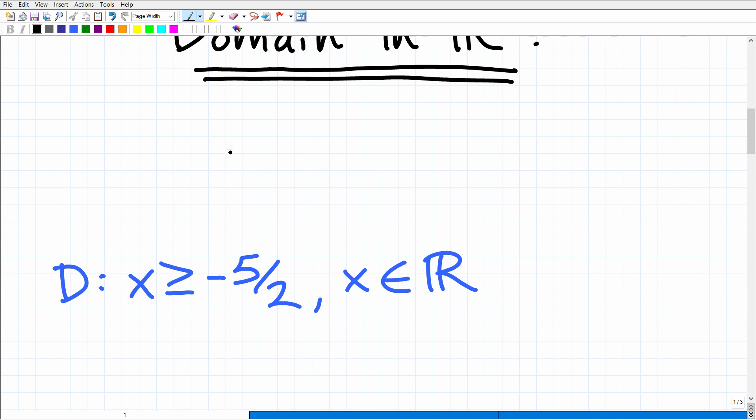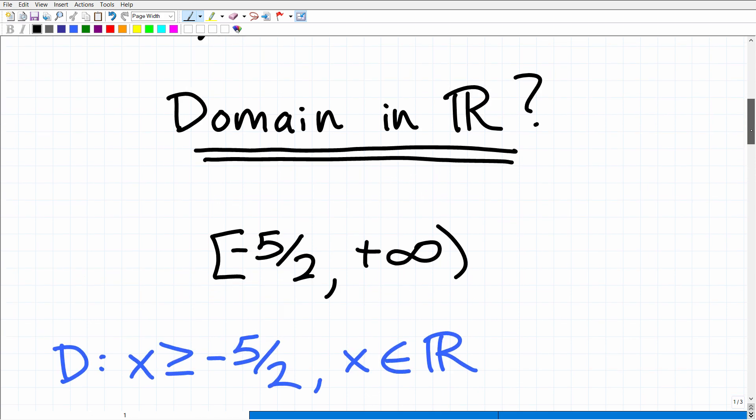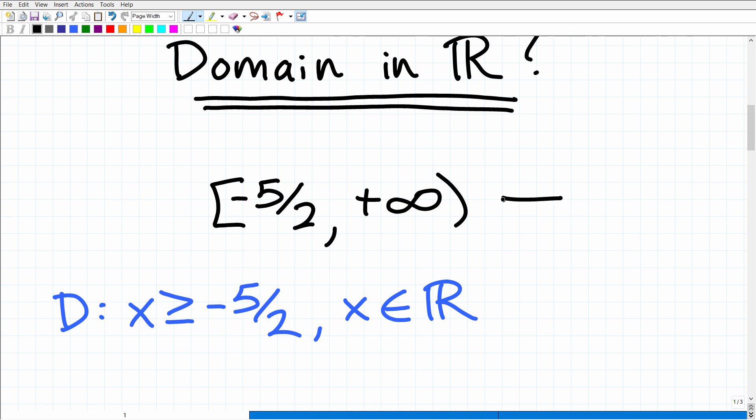You could have done negative 5 halves here, and you could have probably gone to positive infinity. This would have been okay as well, right? But this is a little bit more advanced.